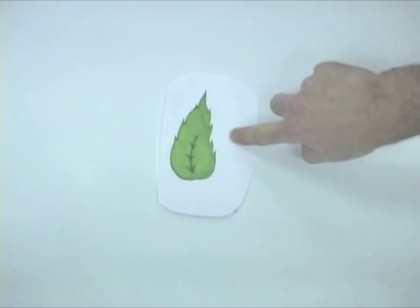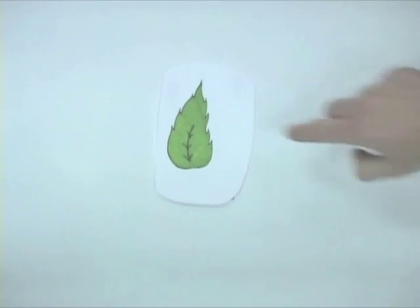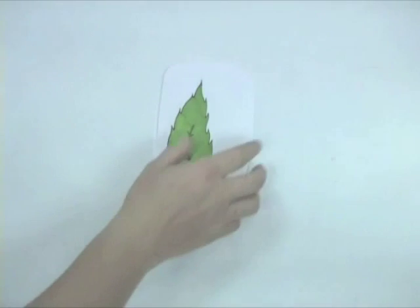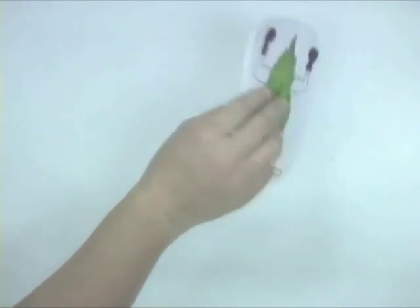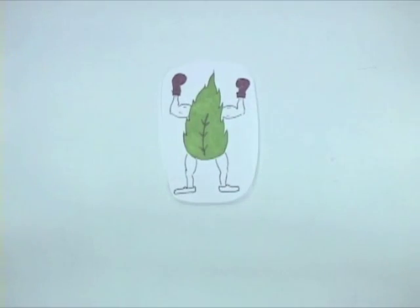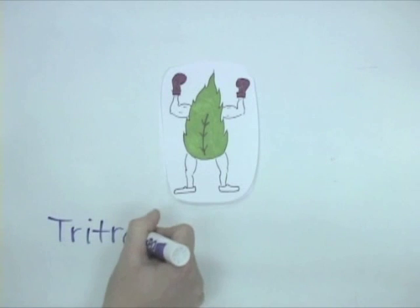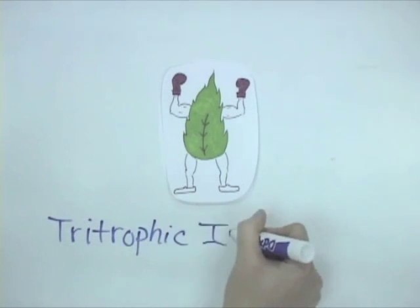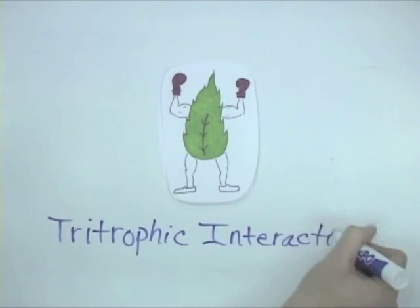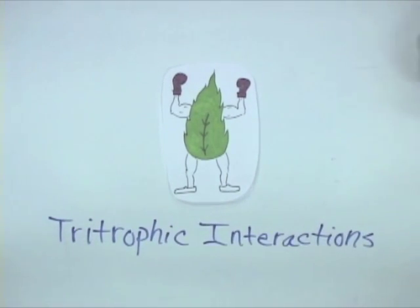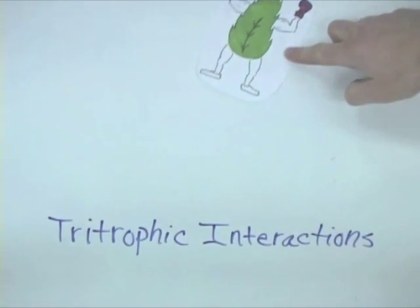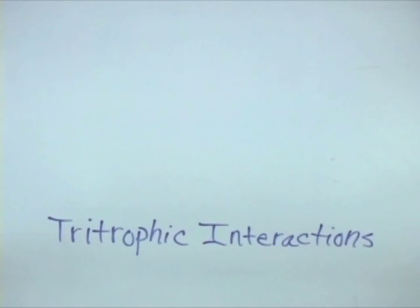So, as you can see, plants are not passive players in this dance. They actively defend themselves directly and indirectly by communicating through HIPVs and recruiting bodyguards for protection from herbivores.